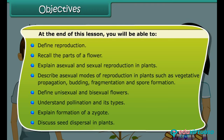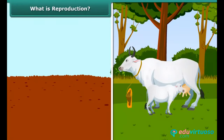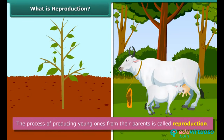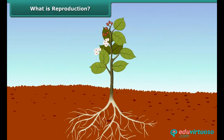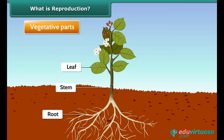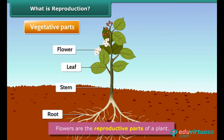What is reproduction? The process of producing young ones from their parents is called reproduction. Most plants have roots, stems and leaves. These are called the vegetative parts of a plant. Flowers are the reproductive parts of a plant.